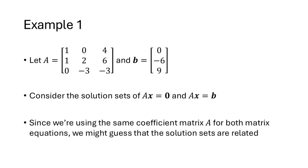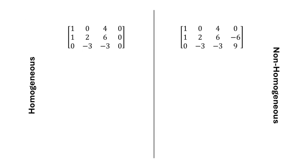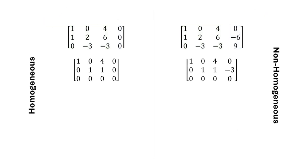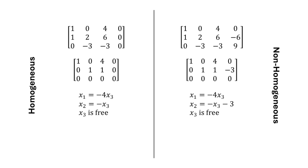Let's consider this matrix A and vector b, and consider the solution sets of both Ax equals 0, which we studied in the previous lecture, and Ax equals b. Since the coefficient matrix is the same for these two equations, we should suspect that the two solution sets should also be related. We're going to work these problems out side by side. On the left we have Ax equals 0, on the right Ax equals b. Notice that the first three columns of these two augmented matrices are the same, but the fourth columns are different. We reduce both matrices and write the general solutions to both systems.